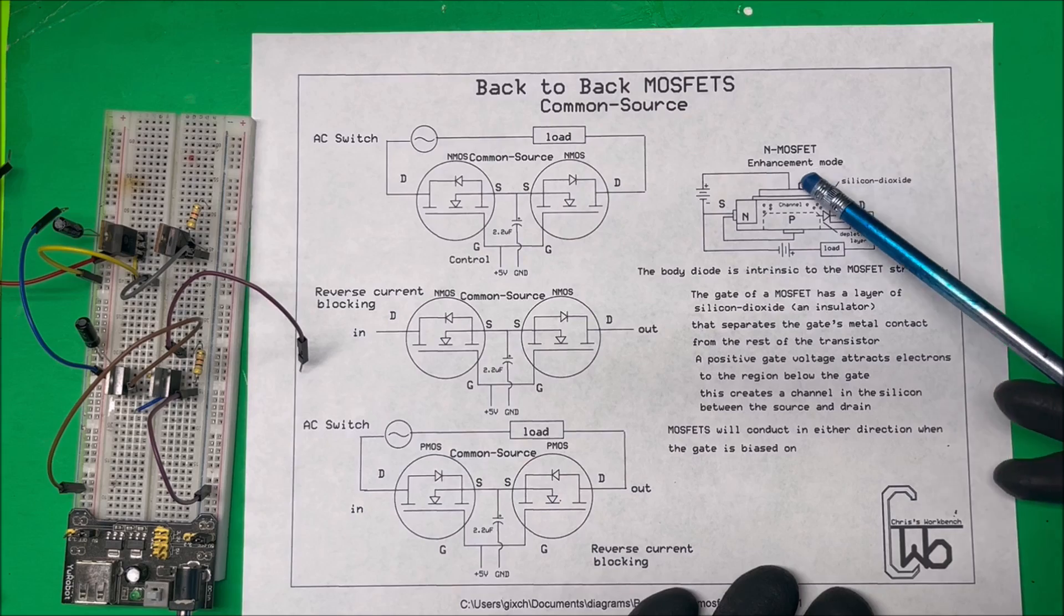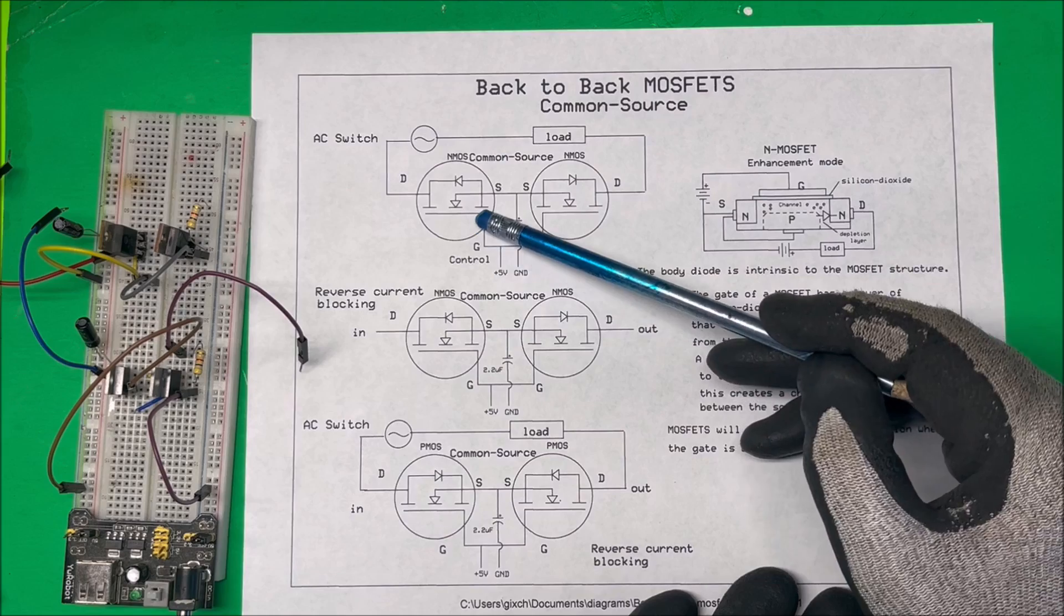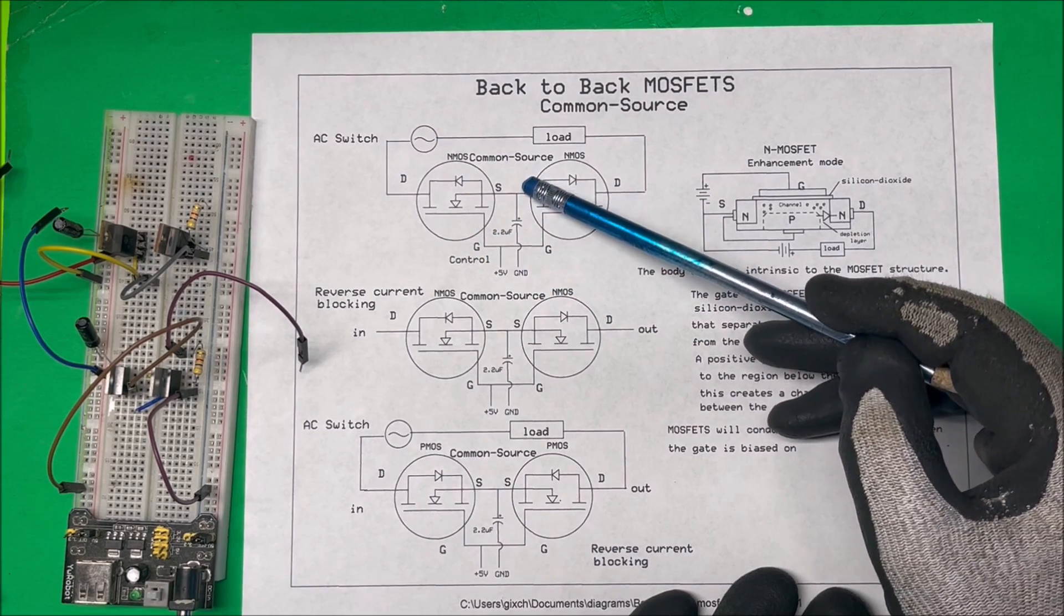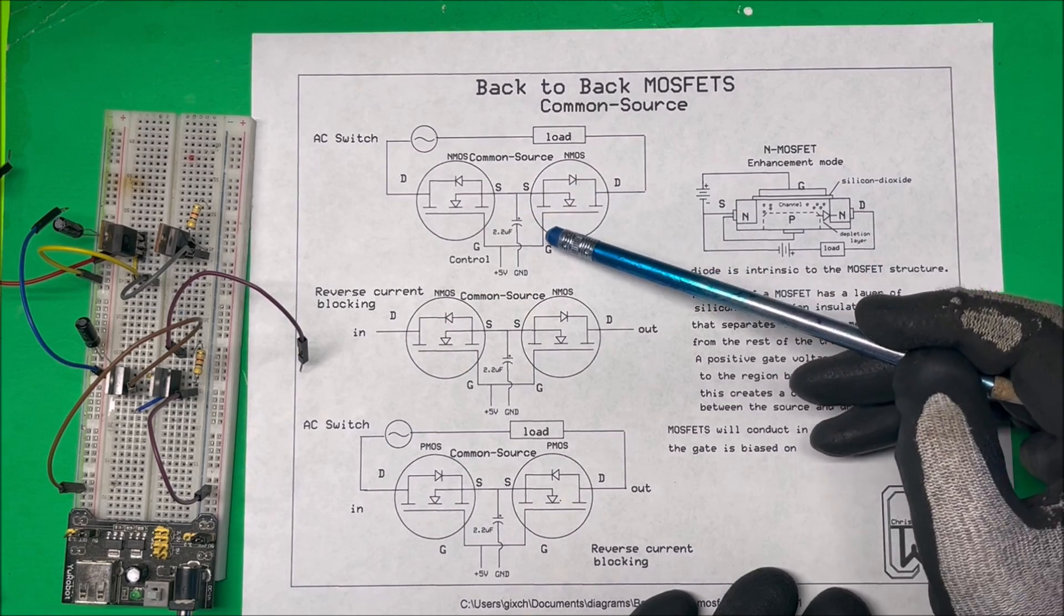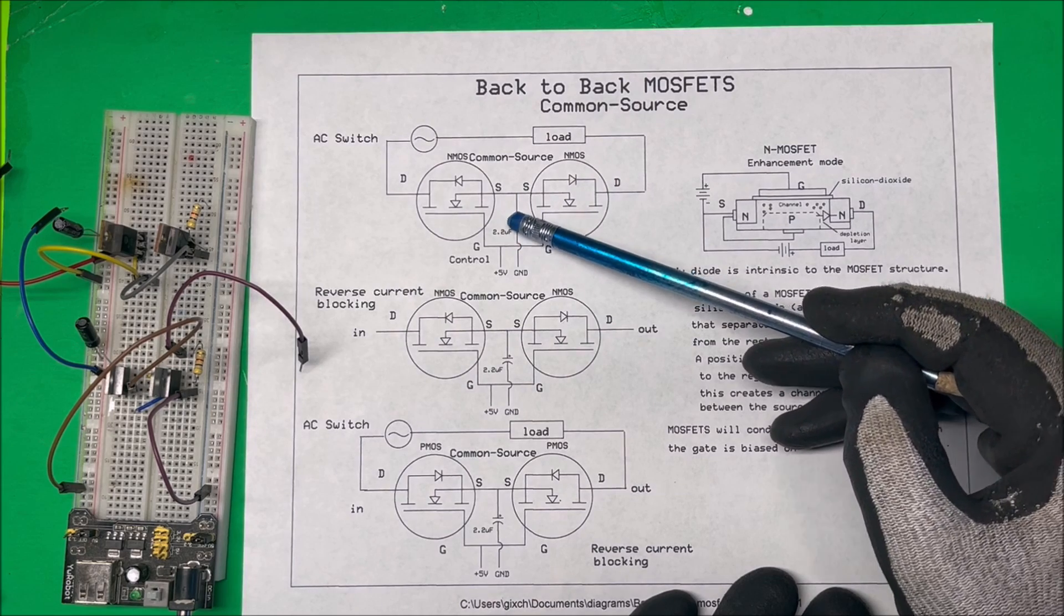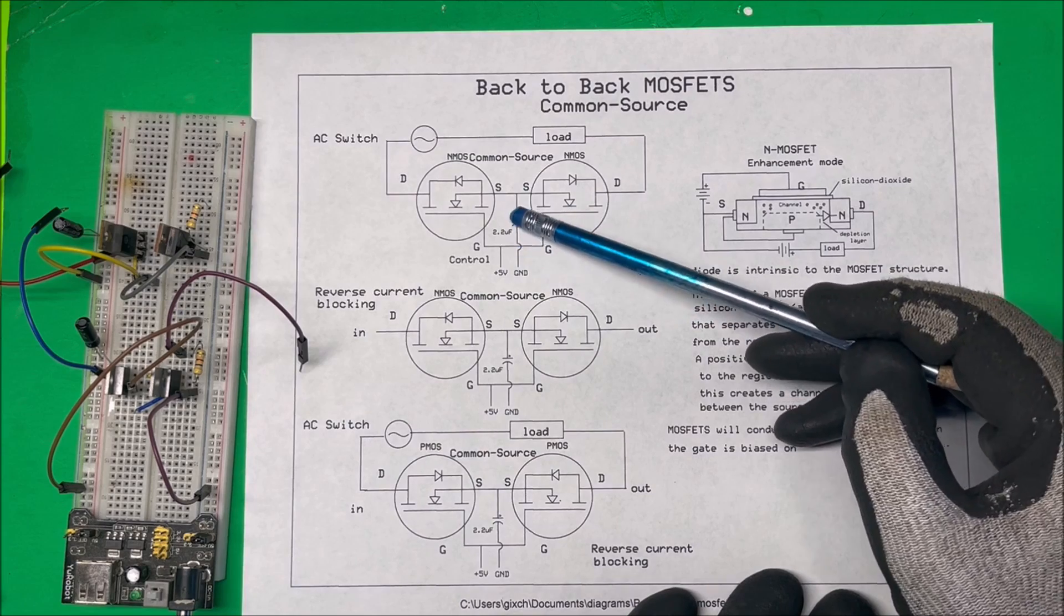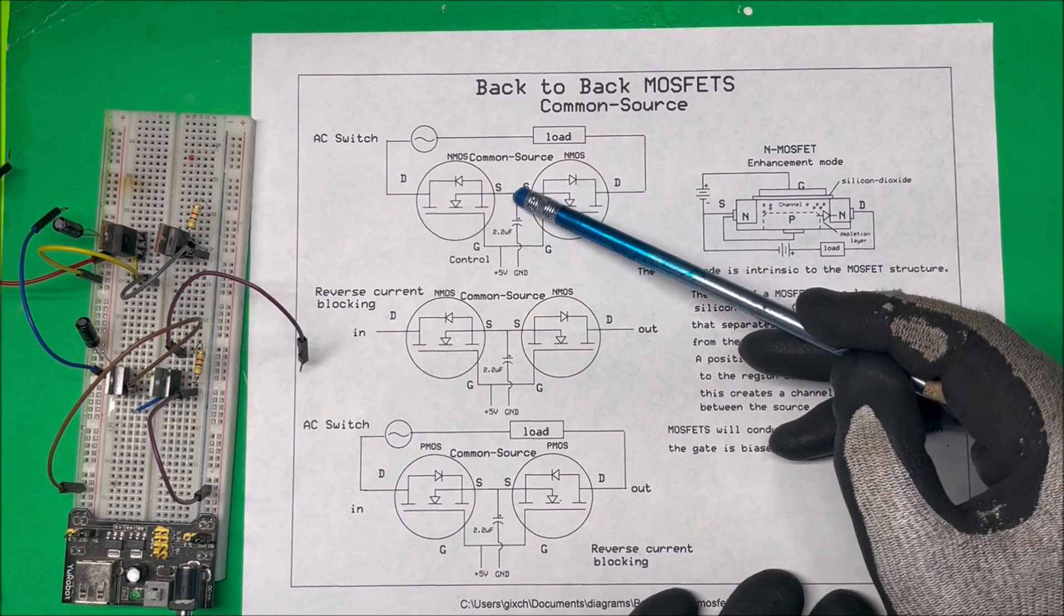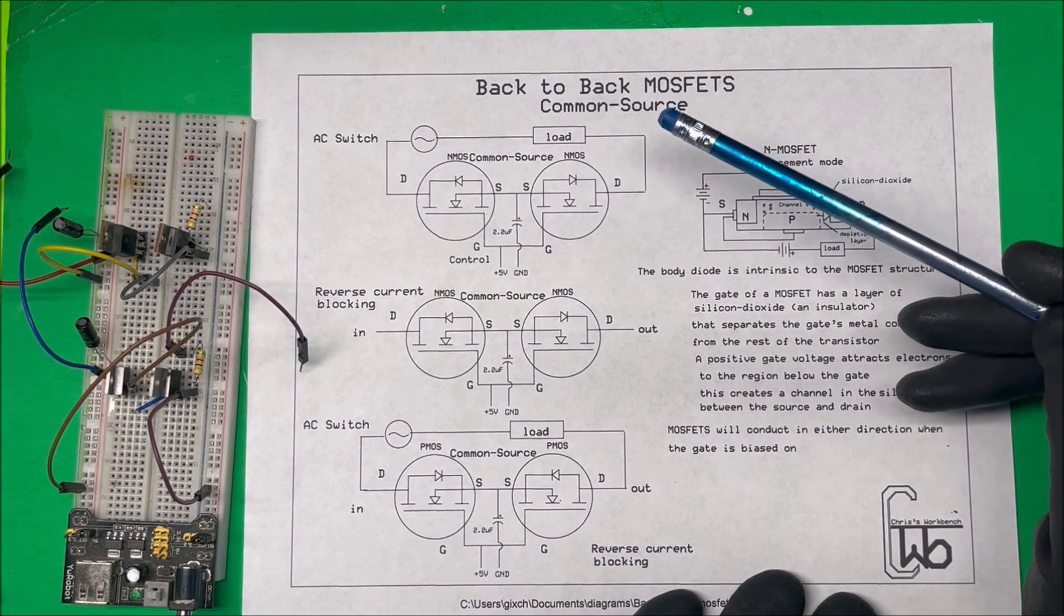Over here I have the positive going to the gate. In order to turn it on, we have to have negative on this source, these two source pins. What I'm doing is using a 10 microfarad capacitor on there, and that capacitance is enough to turn this on. You could connect it solid, but I'm putting a capacitor in there and that seems to work fine.